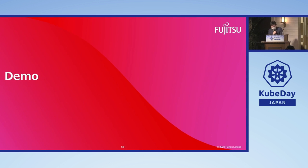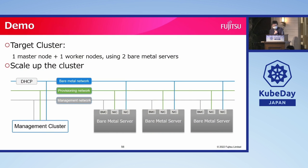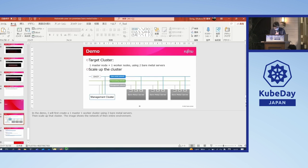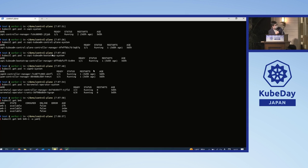In the demo, I will first create a one-master, one-worker cluster using two bare metal servers, and then scale up that cluster. This image shows the network of the entire environment. The Management Cluster needs access to the BMC, access to a provisioning network in which Ironic runs, and also the bare metal network in which the Workload Cluster Kubernetes runs. Because provisioning a bare metal server is very time-consuming, this is a video recording.